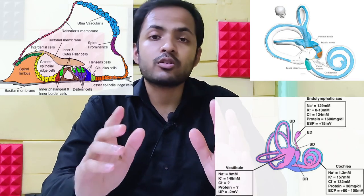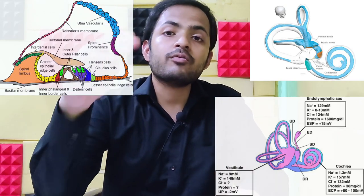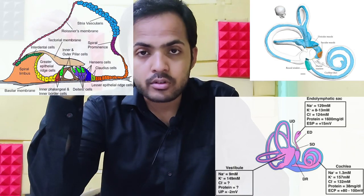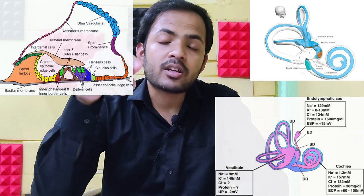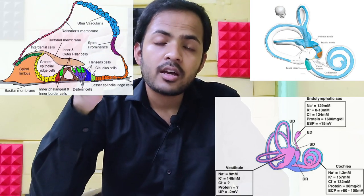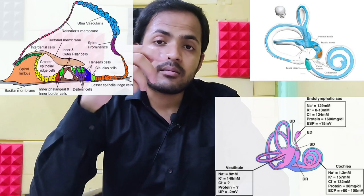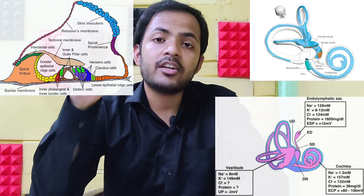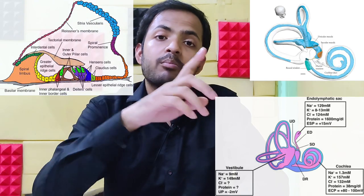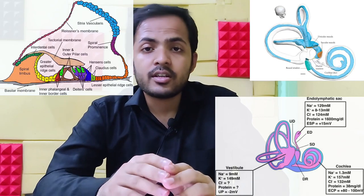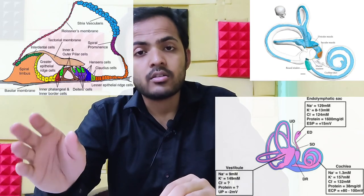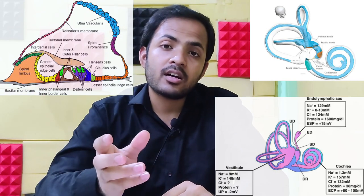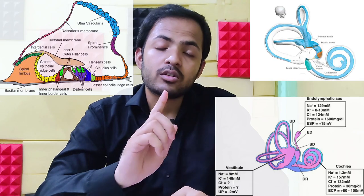Endolymph is a special kind of fluid which contains lots of potassium ions and very little sodium ions. This endolymph is secreted from the stria vascularis, and it has a higher voltage value — about 80 to 90 millivolts — compared to the perilymph. This endolymph is present inside the cochlear part, which helps in our hearing, and it is also present in the semicircular canal and vestibule, where it helps to maintain the balance of our body.